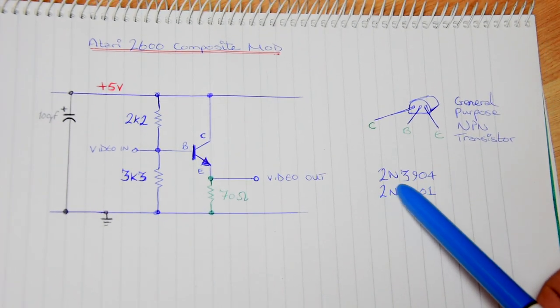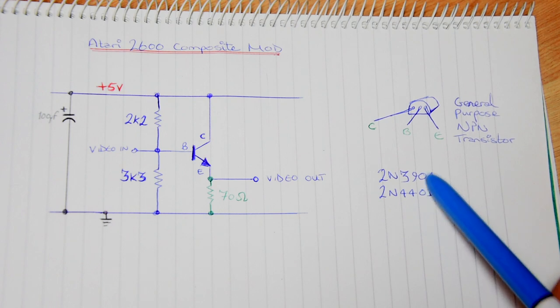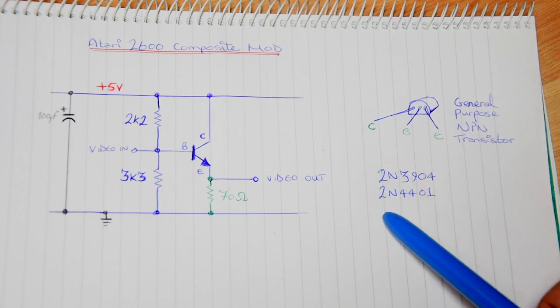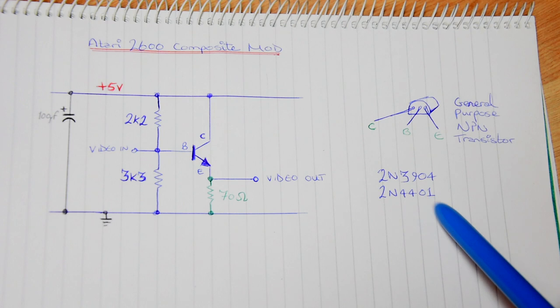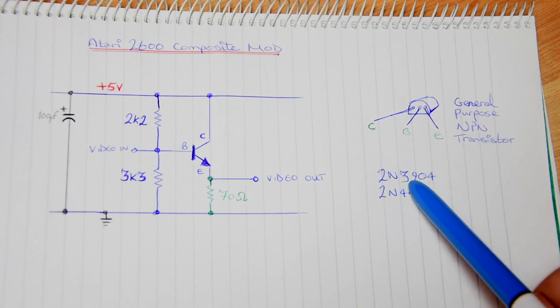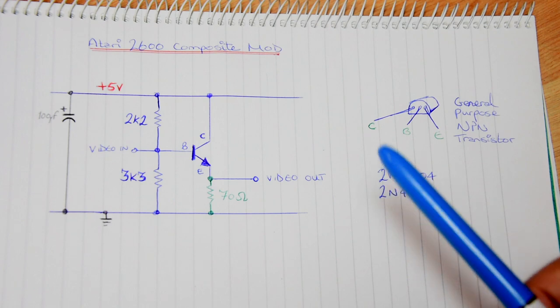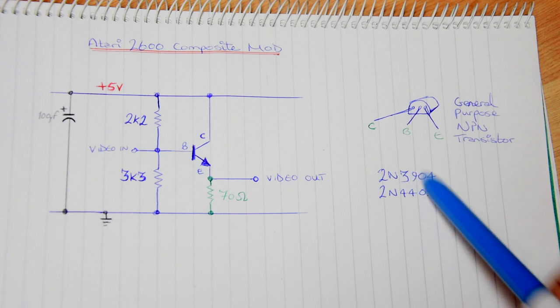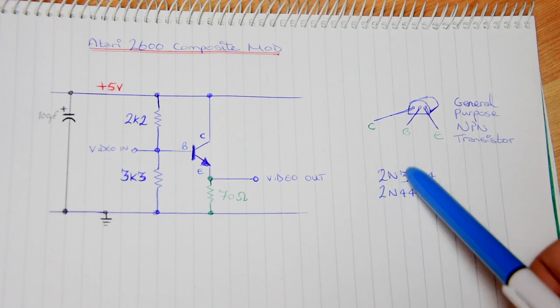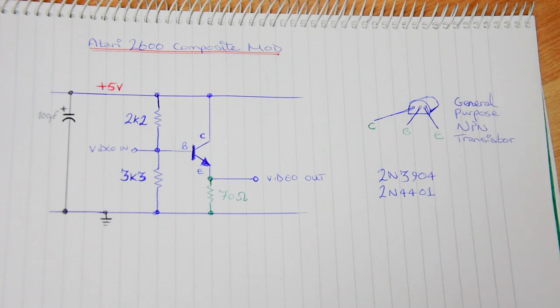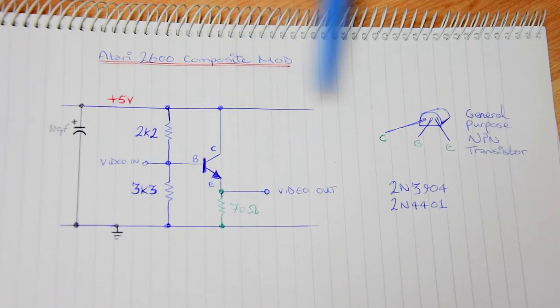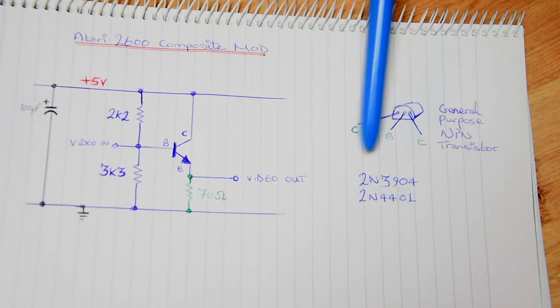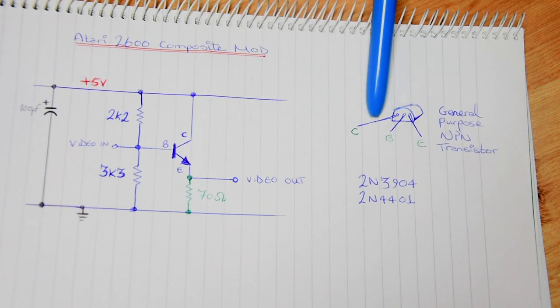That's basically all it is. The transistor is a general purpose transistor which has very small differences in properties, so you can just substitute them. Just make sure if you're going to substitute them, check on the data sheets that this is how they're set out.